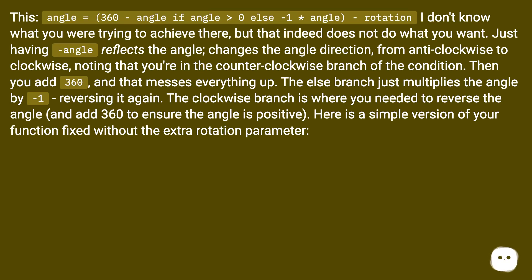Then you add 360, and that messes everything up. The else branch just multiplies the angle by -1, reversing it again. The clockwise branch is where you need it to reverse the angle and add 360 to ensure the angle is positive. Here is a simple version of your function fixed without the extra rotation parameter.